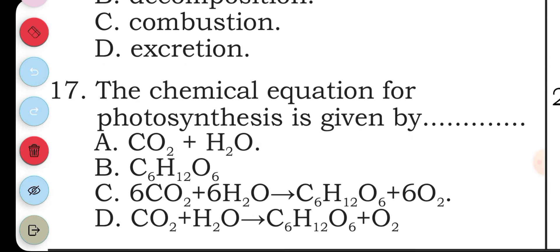Question seventeen: the chemical equation for photosynthesis is given by: A CO₂ + H₂O, B C₆H₁₂O₆, C 6CO₂ + 6H₂O → C₆H₁₂O₆ + 6O₂, D CO₂ + H₂O → C₆H₁₂O₆ + O₂. Photosynthesis has carbon dioxide and water coming together to give glucose and oxygen, so the answer to question seventeen is C.